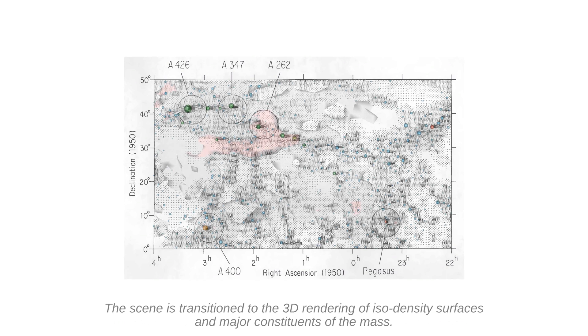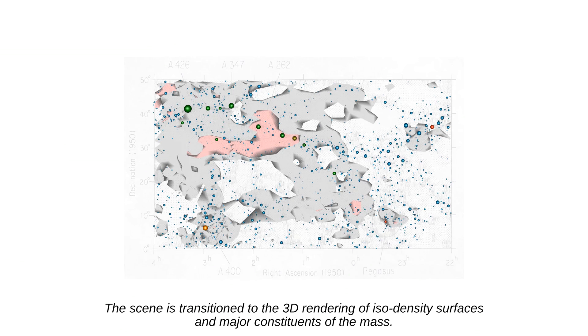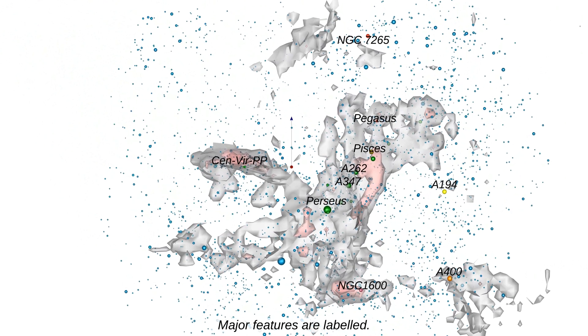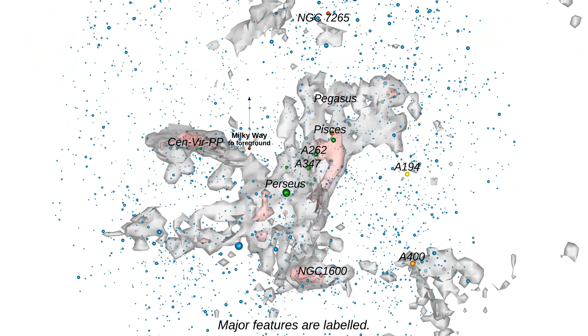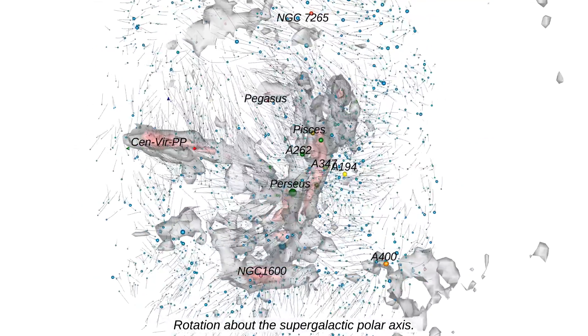The scene transitions to a 3D rendering of ISO density surfaces and the major constituents of the mass. Major features are labeled, orbits are added, and the view rotates about the supergalactic polar axis.